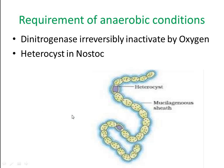Heterocysts are thick-walled cells that differentiate when filamentous cyanobacteria are deprived of ammonium. These cells lack Photosystem II, the oxygen-producing photosystem of chloroplasts, so they do not generate oxygen. Heterocysts appear to represent an adaptation for nitrogen fixation, as they are widespread among aerobic cyanobacteria that fix nitrogen.